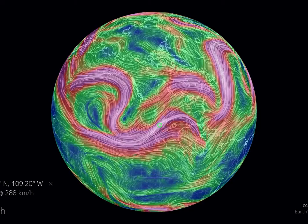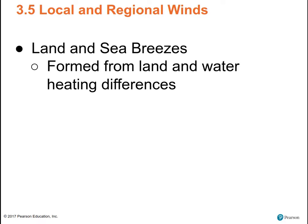Now we're going to talk about local or regional winds instead of global patterns. The first one: land-sea breezes, formed from land and water heating differences. The land-sea breezes, the katabatic breezes, the mountain and valley breezes, and monsoonal circulation — all of those are going to be caused by land-water heating differences.